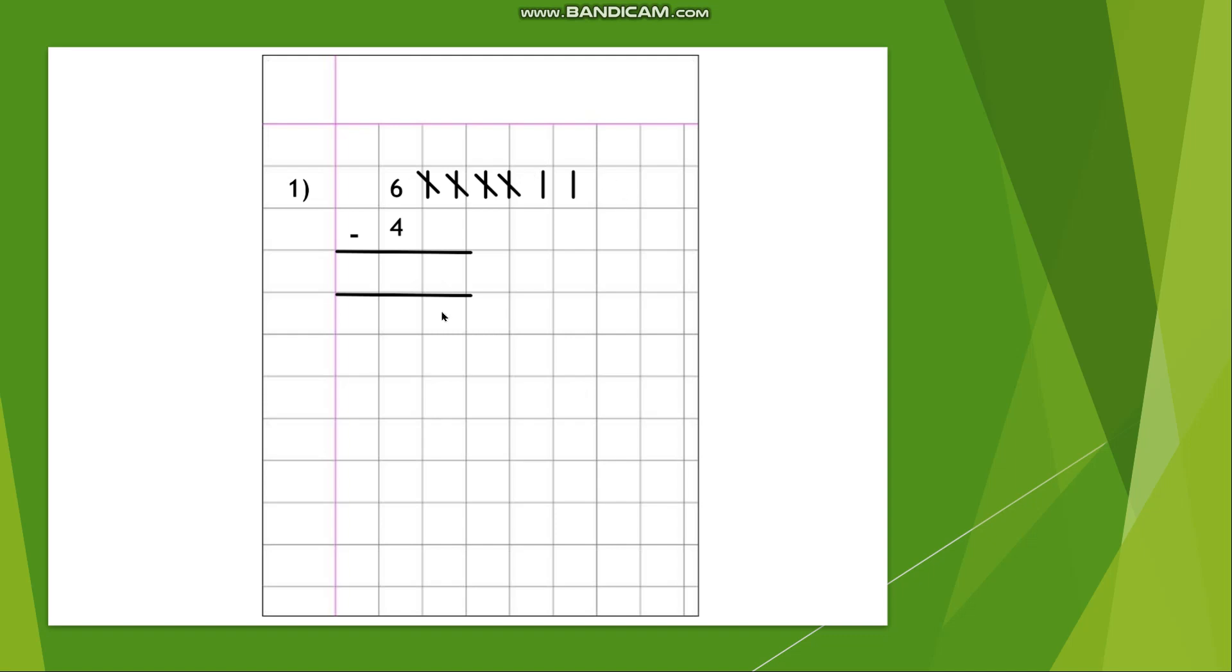Now, can you tell me how many lines are remaining? Yes! It is 2. So my answer will be 2. Now I know that you must have understood how you will perform vertical subtraction.